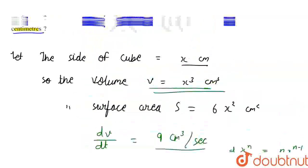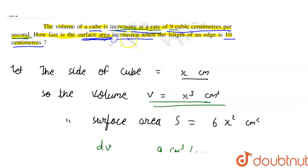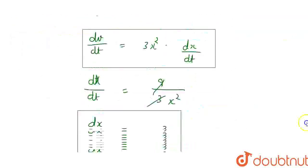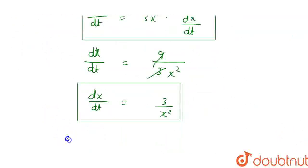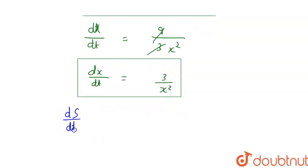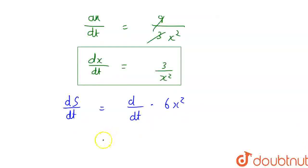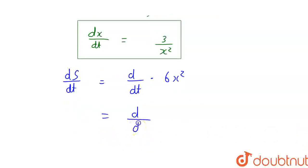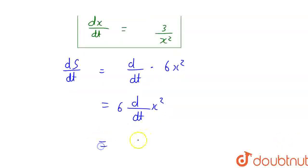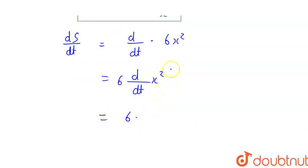Now, what is asked in the question is how much increment there will be in the surface area when the edges (side) are 10 cm. So we need to find dS/dt. dS/dt equals d/dt of S, and S = 6x², so d/dt of 6x². Since 6 is a constant, it comes out: 6 · d/dt(x²). Now differentiating x² with respect to x first, then by chain rule, we get 6 · 2x · dx/dt.